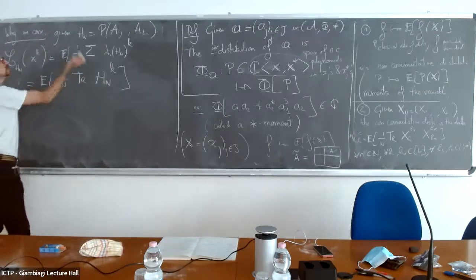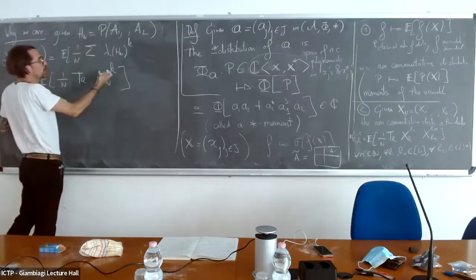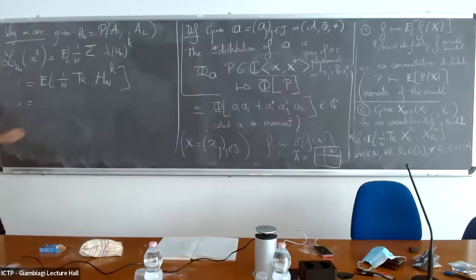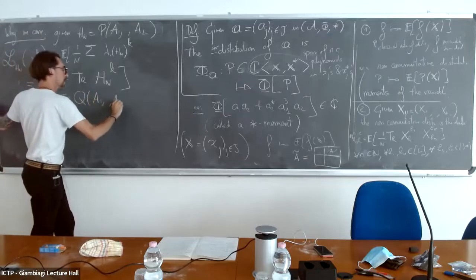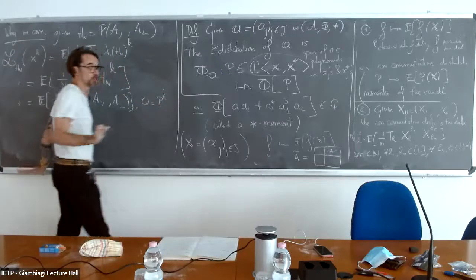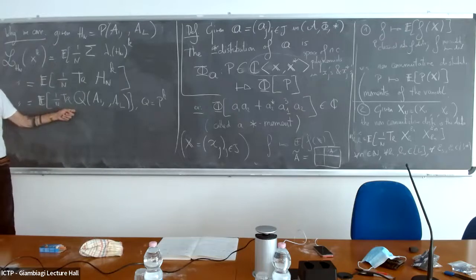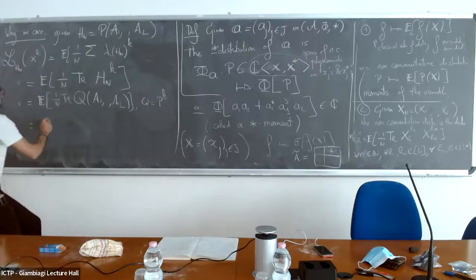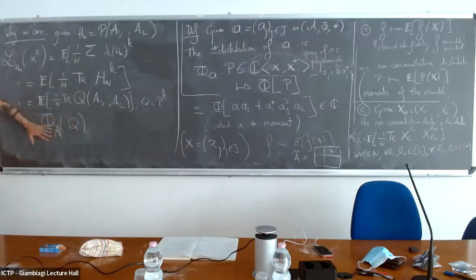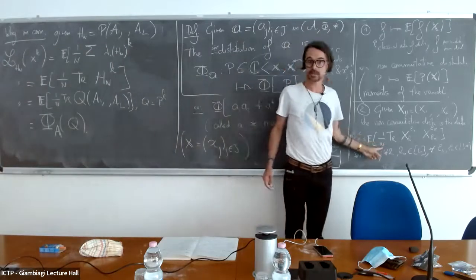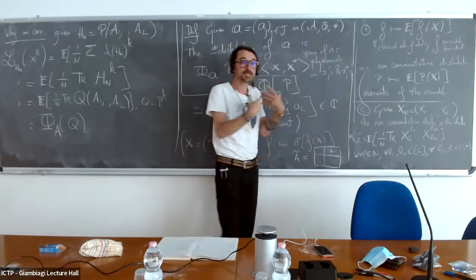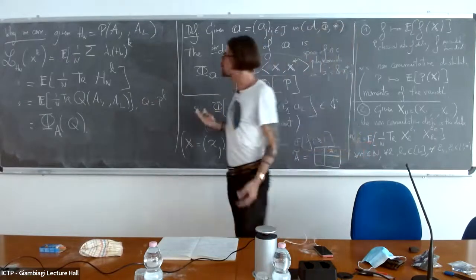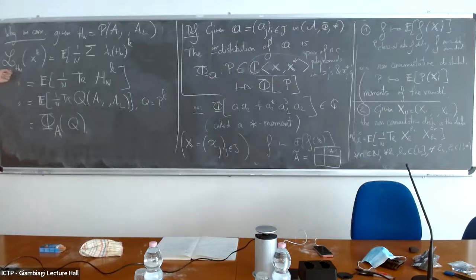Since H_n is a polynomial in A_1 through A_L, then H_n to the k is also a polynomial in A_1 through A_L. You can write this as the expectation of one over n times the trace of a polynomial Q in A_1 through A_L, where Q is p to the power k. This is encoded in the star-distribution of A_1 through A_L — it is just a linear combination of such terms. Conclusion: if you can compute the star-distribution of your family of matrices and have a nice description of it, you can expect a nice description of H_n.